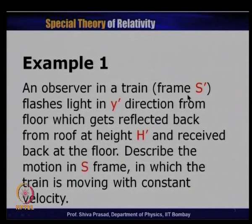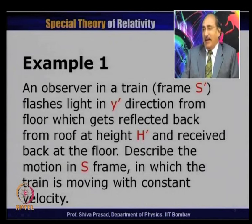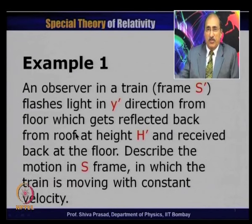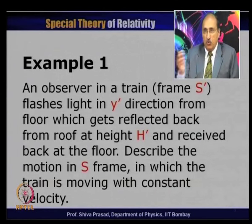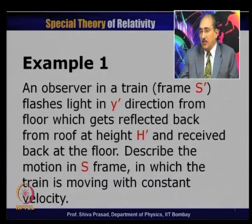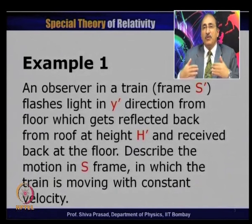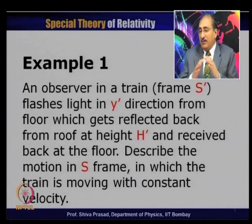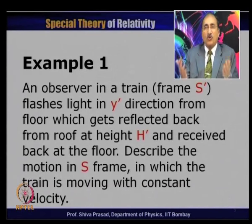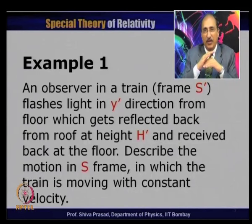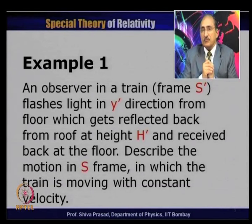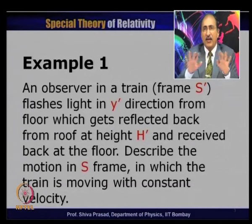An observer in a train, which we are calling frame S', flashes light in the y direction from the floor, which gets reflected back from the roof at height h, and is received back at the floor of the compartment. We have to describe the motion in the S frame, which is the ground frame in which the train is moving. We assume this train is moving with a constant velocity, as we are always in the realm of special theory of relativity.